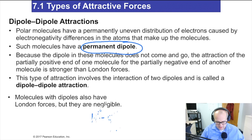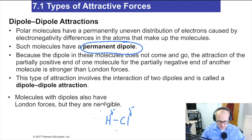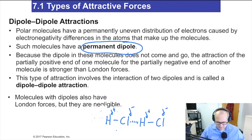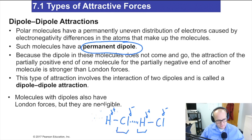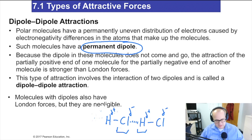Let's talk about a simpler molecule that has dipole-dipole interaction: hydrogen chloride. The chlorine is delta negative and the hydrogen is delta positive. Another hydrogen chloride molecule is also delta positive and delta negative. These two molecules will interact — the delta positive of the hydrogen will be attracted to the delta negative of the chlorine. This is how dipole-dipole interactions work. These dipoles are permanent; they exist always, unlike London forces which are temporary.